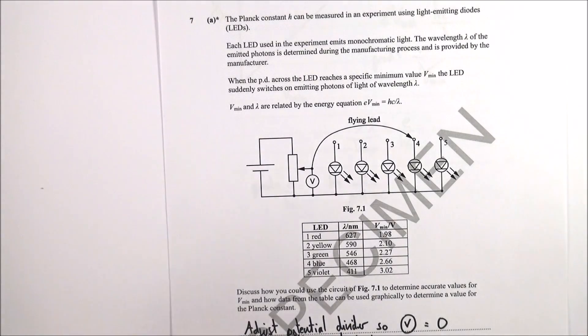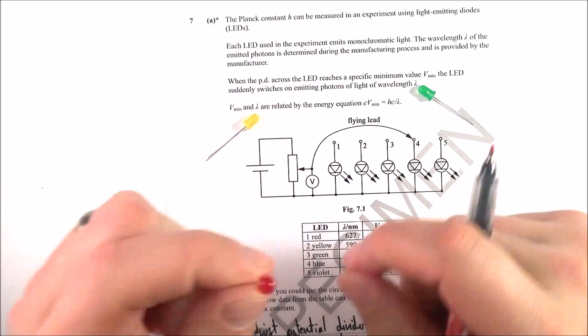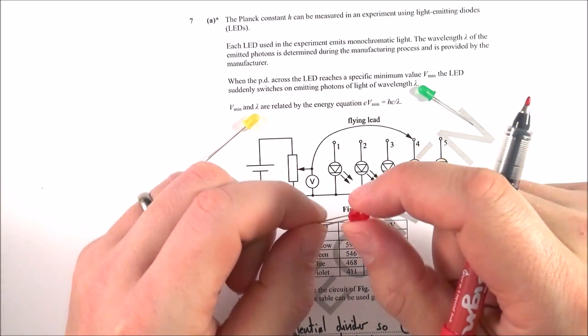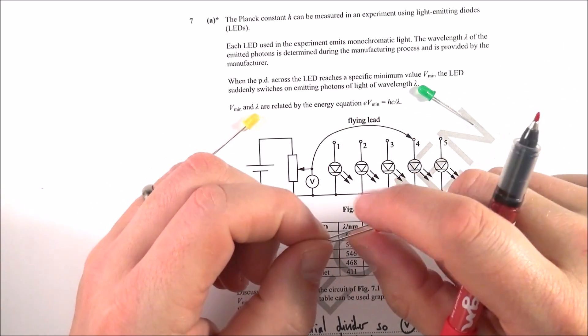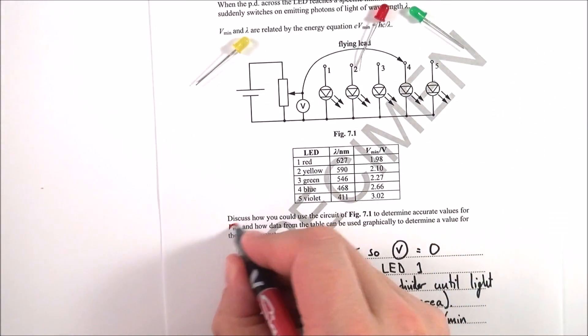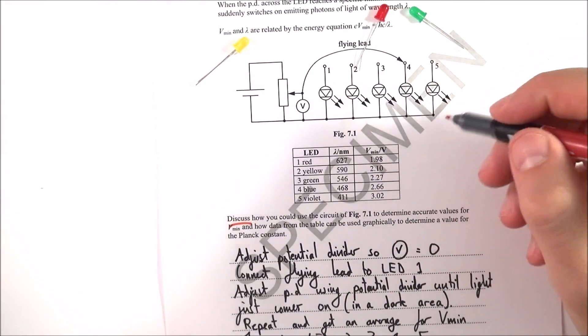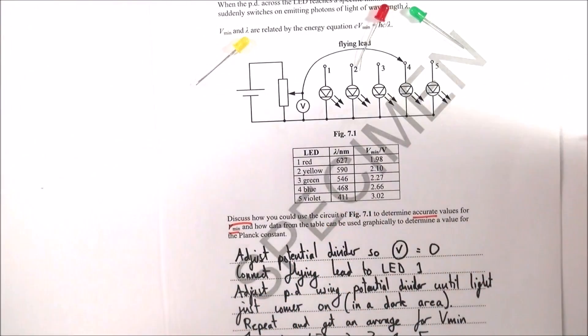Question 7 is something you might find familiar - it's about using LEDs to work out Planck's constant. You might have done this as one of your practical assessments or required practicals. You've got to discuss how you'd use this circuit to determine accurate values for the minimum PD.